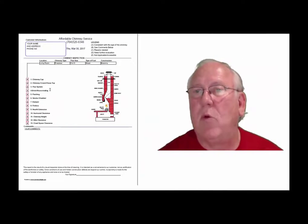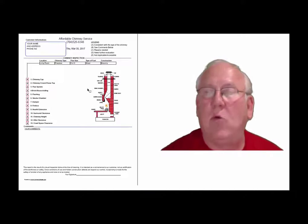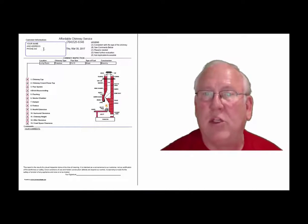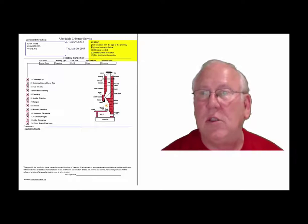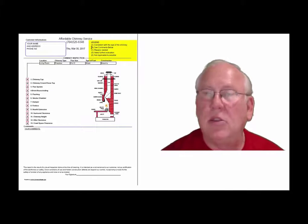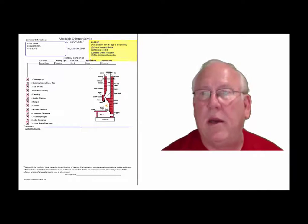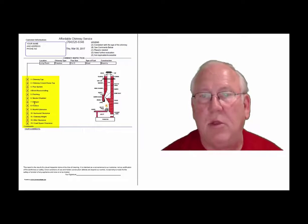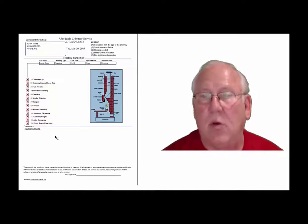Now let's take a look at the inspection report and see how it reads out. This is a generic report — this is exactly what you will get. Only your information will be filled into all these blanks. The upper right-hand corner of the report is the legend. Each one of these initials pertains to something: A is consistent with the age of the chimney, B see comments below, C repairs needed, D need further evaluation, or E not applicable. They're placed into the boxes next to the parts of the chimney that can be easily identified in this diagram. And then you'll find my comments here below.